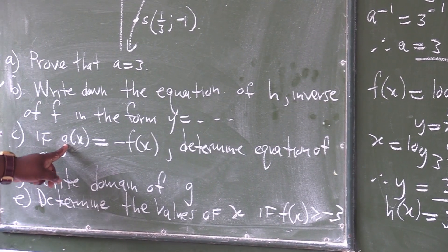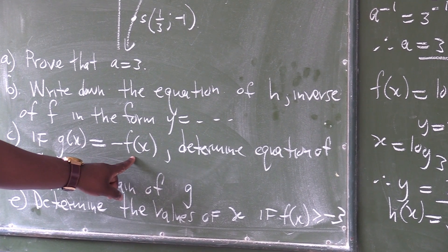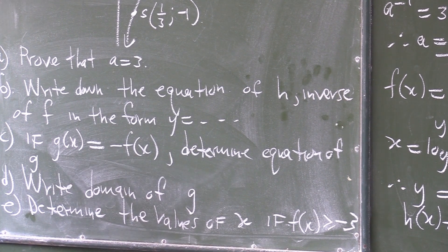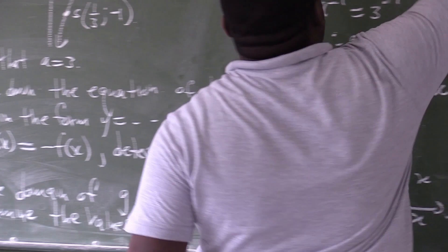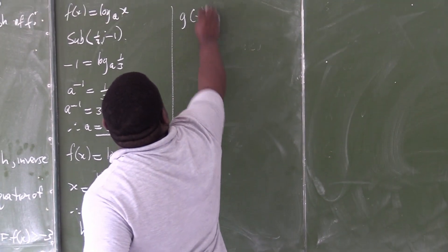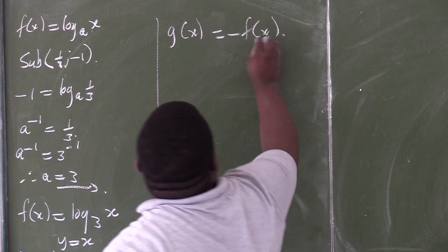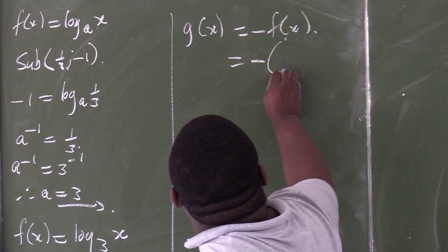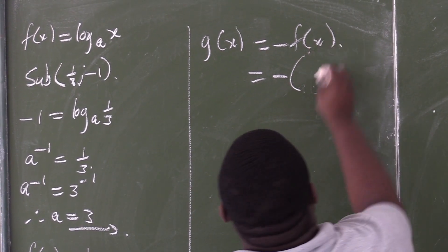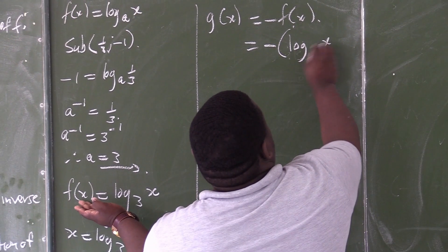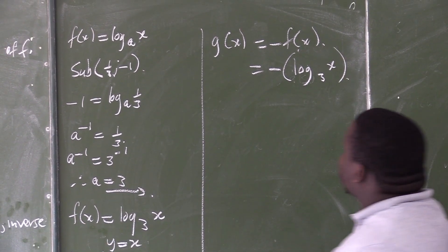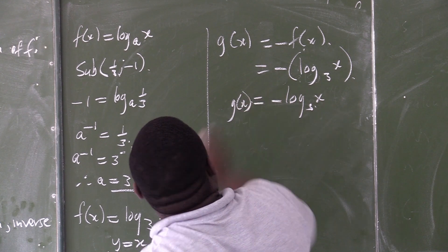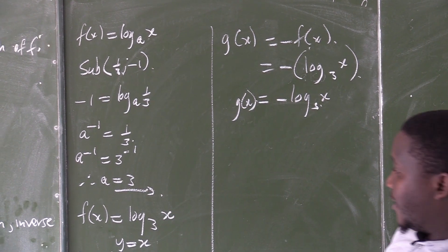Part C: if g of x is equal to negative f of x, determine the equation of g. So g of x equals negative f of x. Substituting f of x, we get g of x equals negative log base 3 of x.